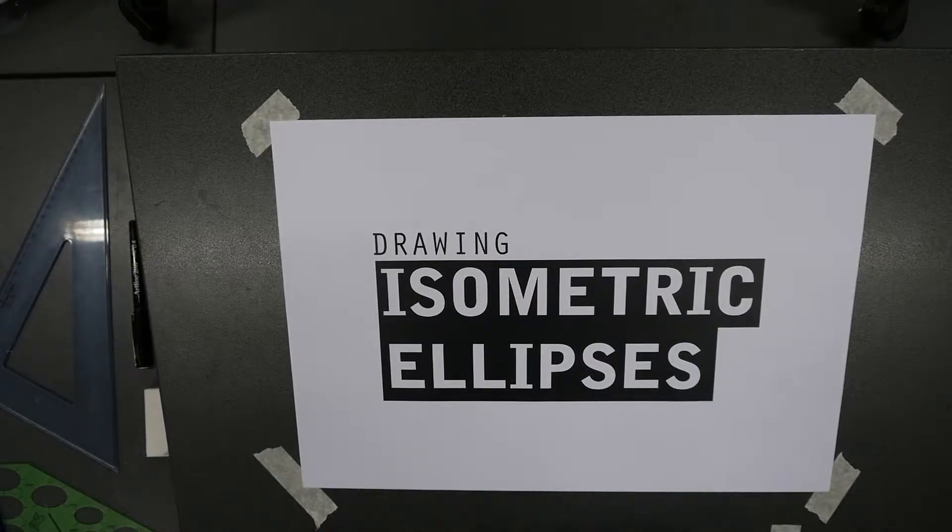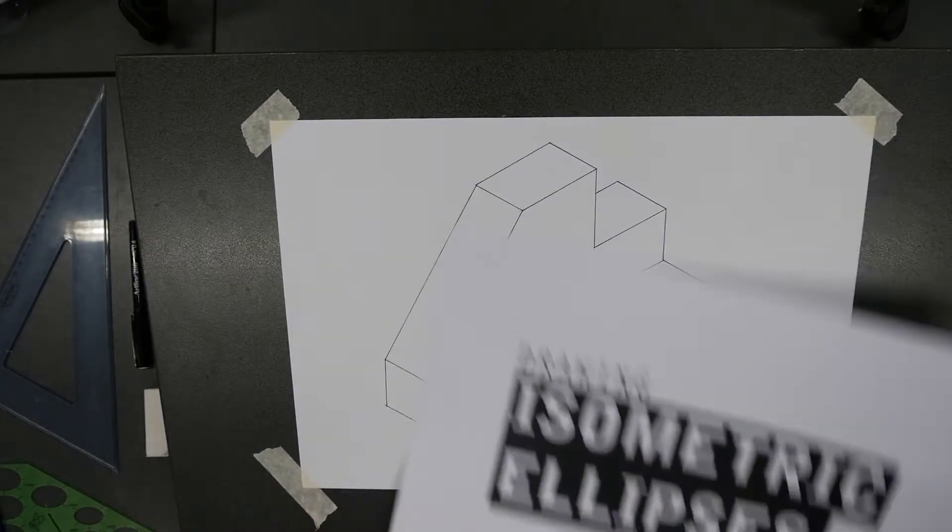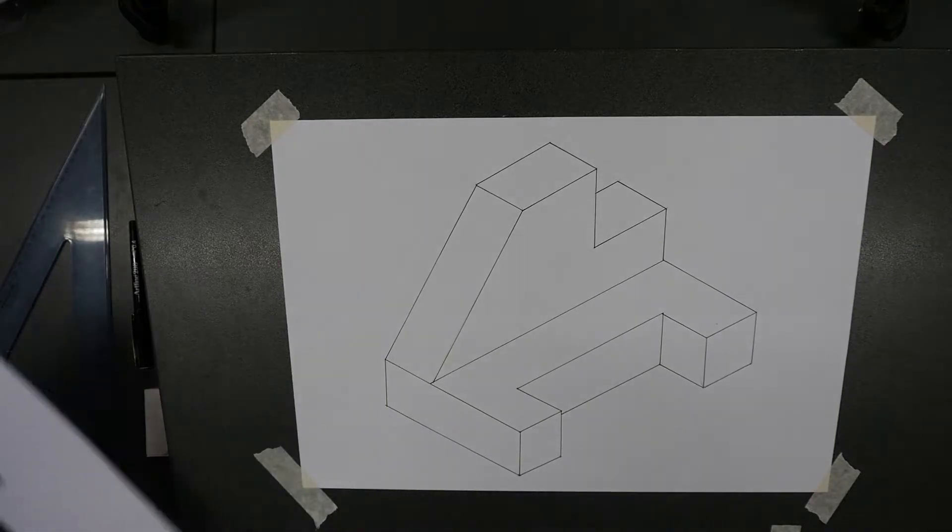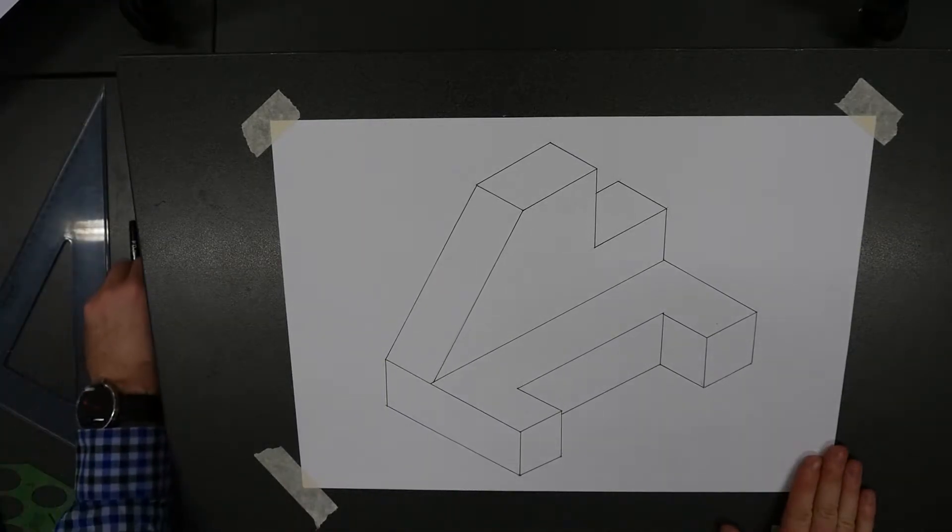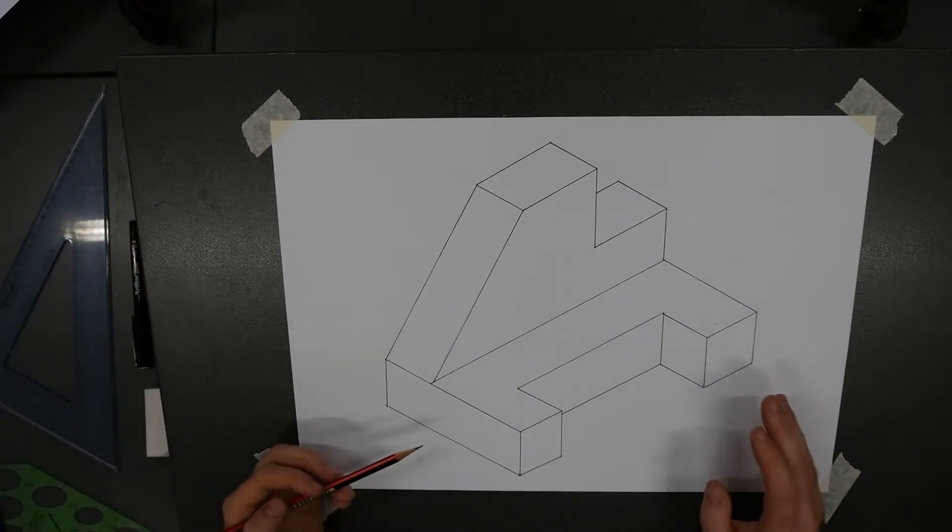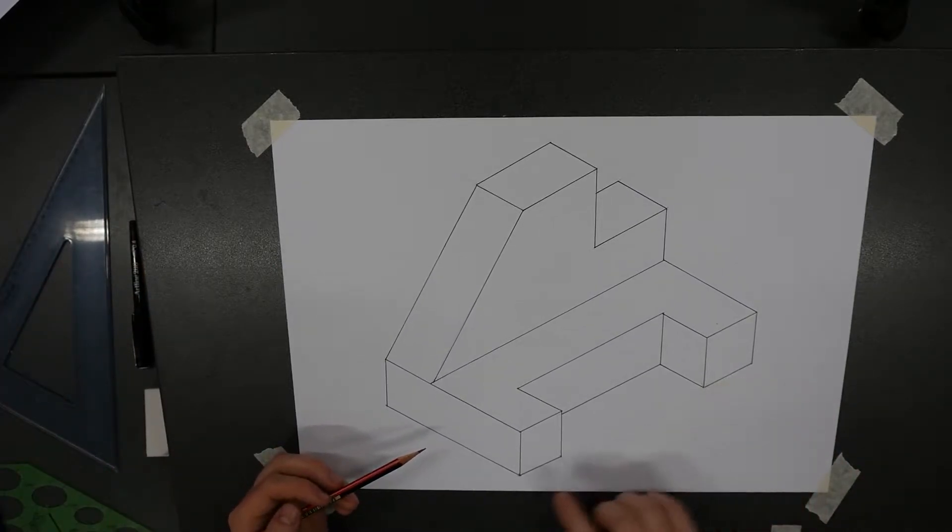Welcome to drawing isometric ellipses. With isometric drawings, as I've completed this one in the past, isometric drawings are representing three-dimensional forms using the isometric or parallel line drawing system.